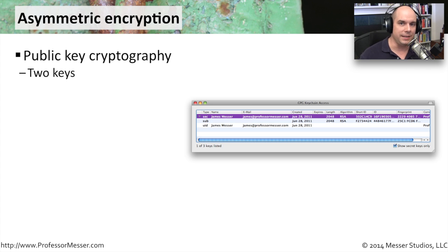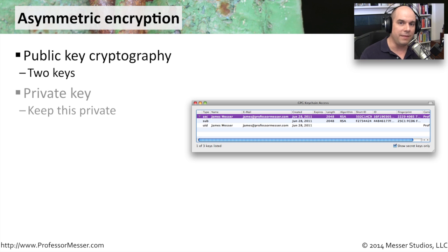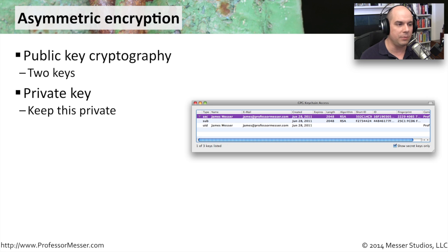There are two keys needed in asymmetric encryption. In symmetric encryption you had exactly the same key, but in asymmetric encryption, as the name implies, you have two keys. You have a private key, and as the name implies, you want to keep it private. Nobody gets their hands on the private key except for you — you would not share it or give it to someone else. Nobody else needs this private key.